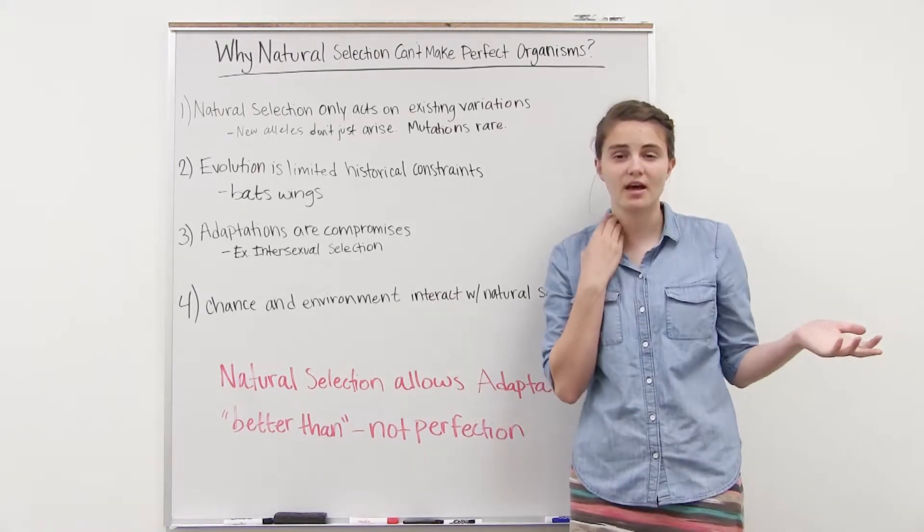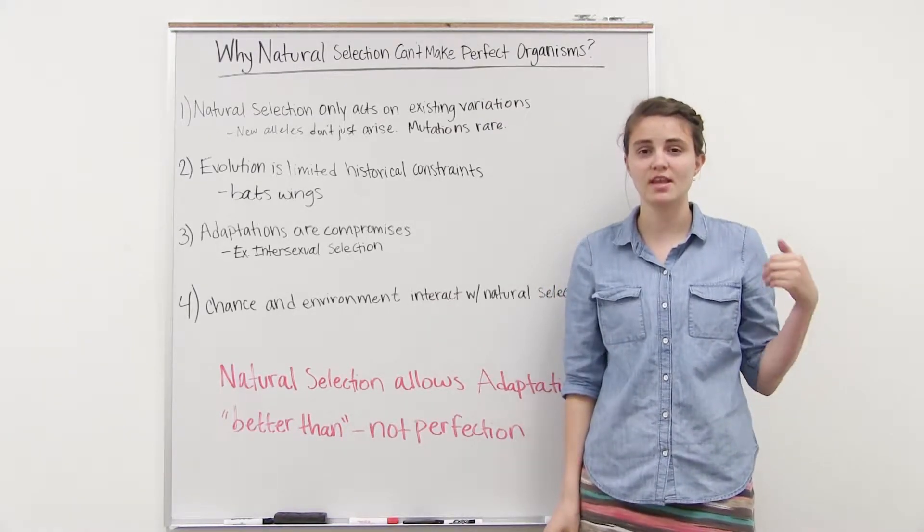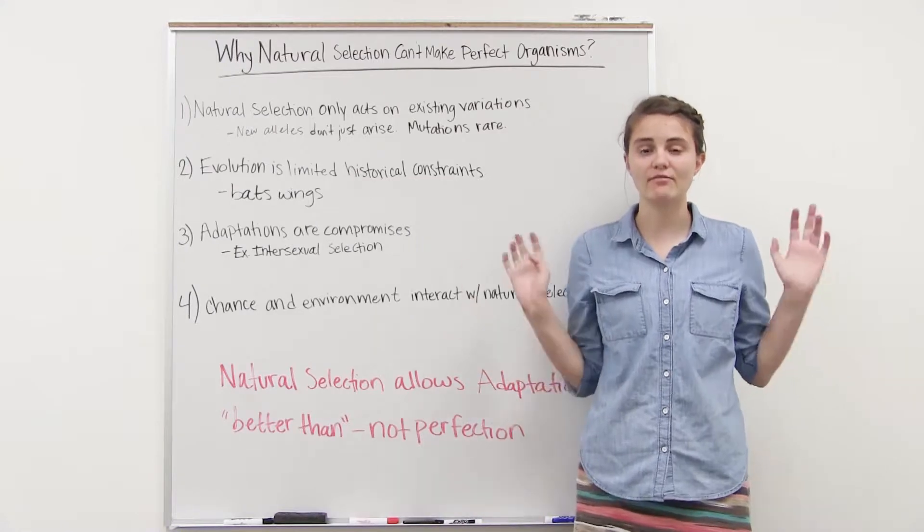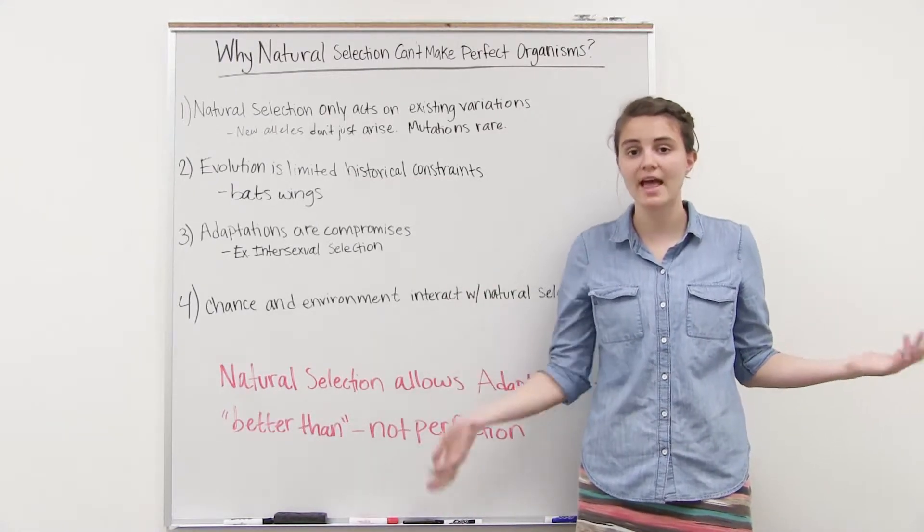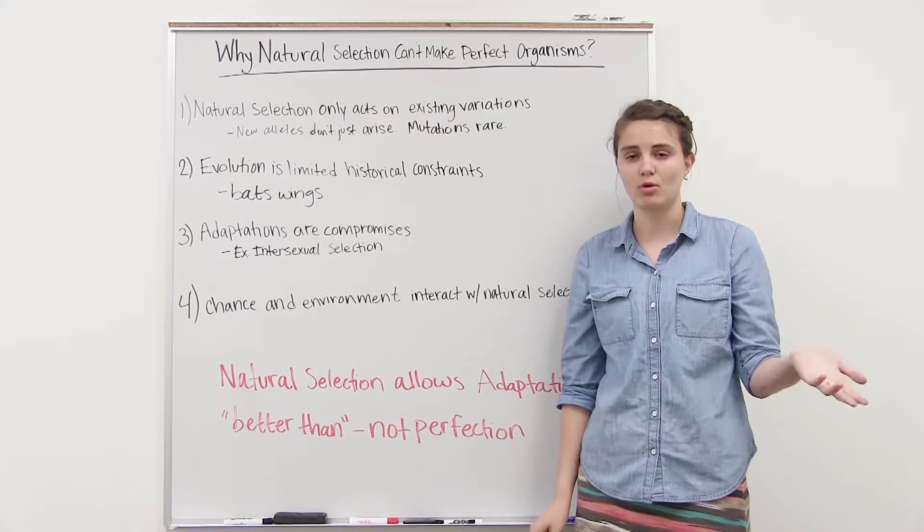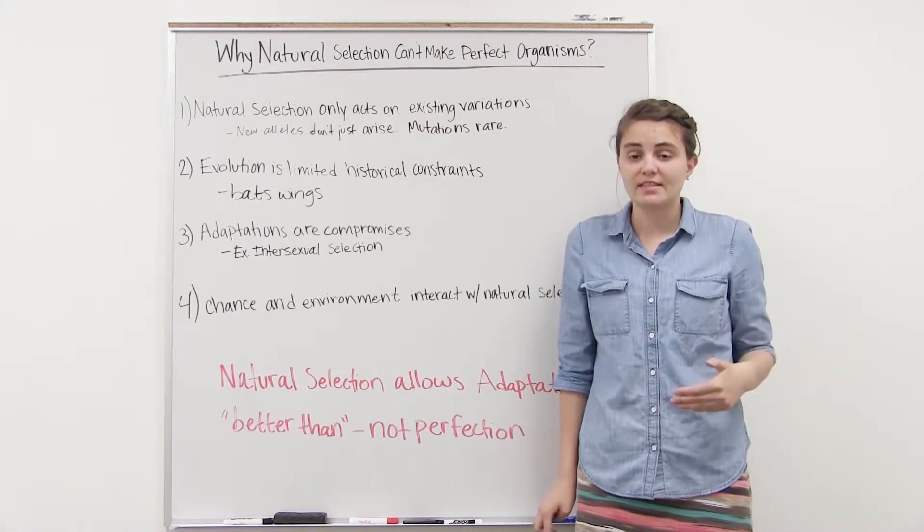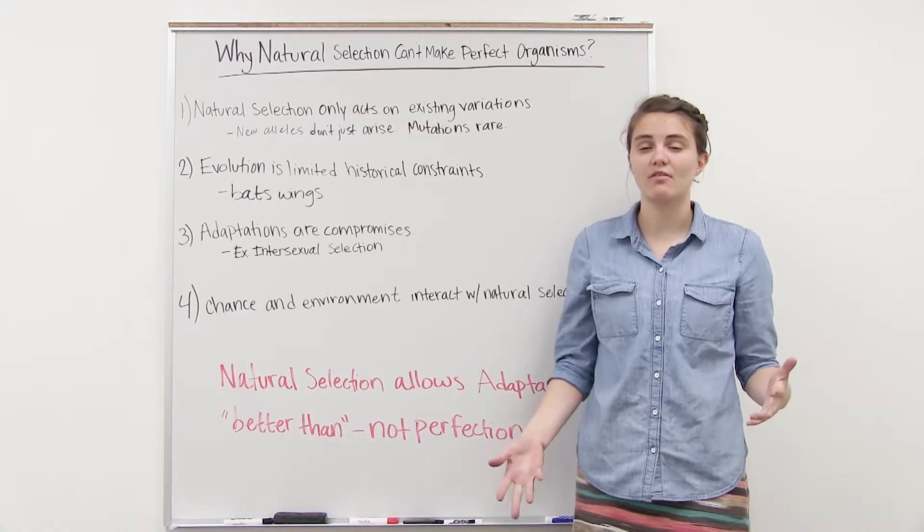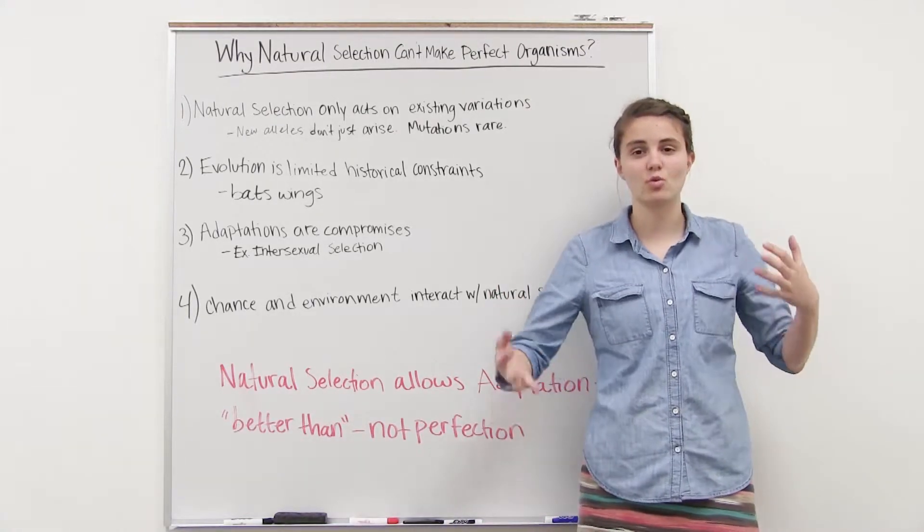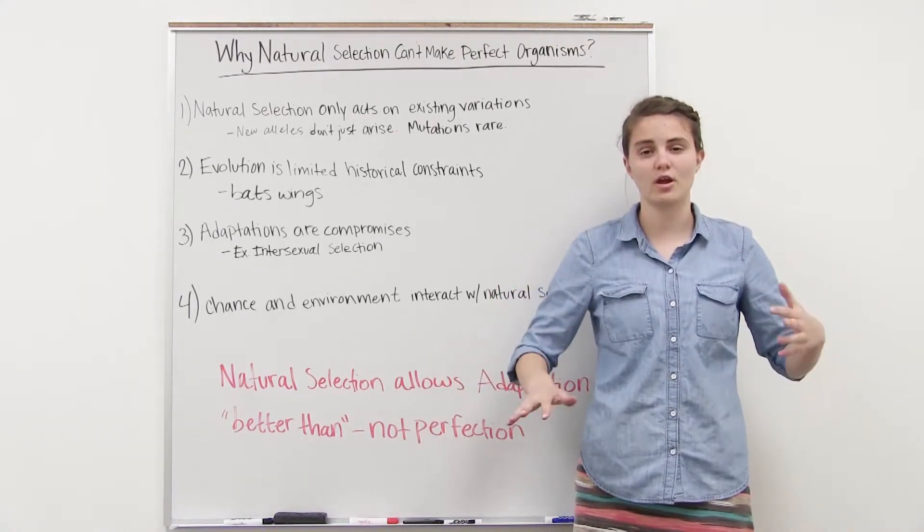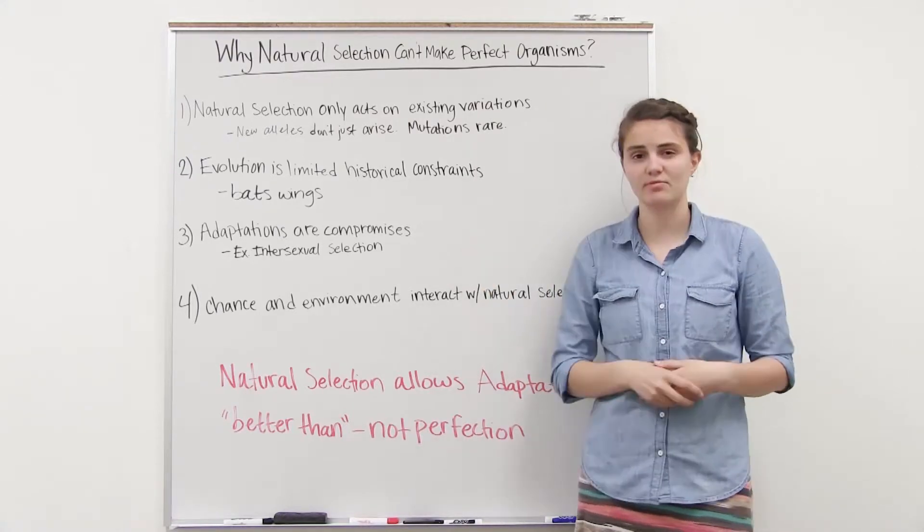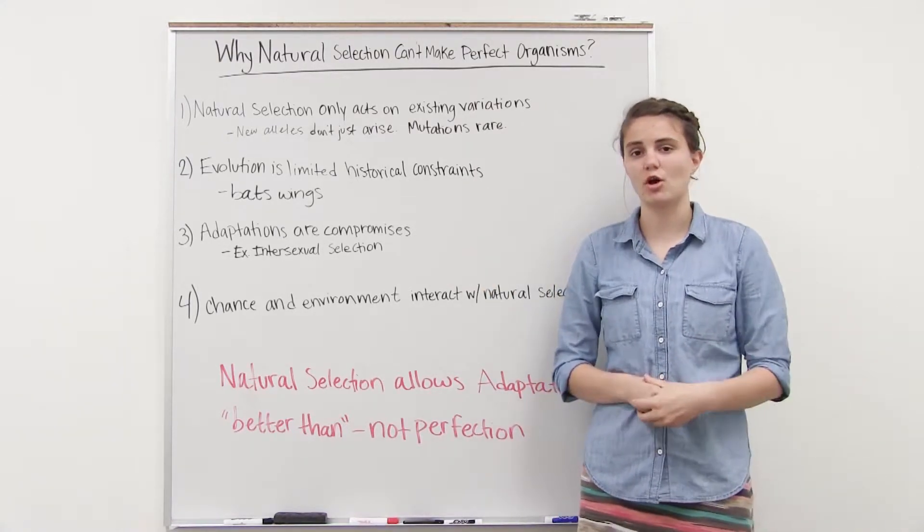In sexual selection, it was advantageous to have these bright colors to attract mates. However, it was also detrimental because they were more prone to being noticed by predators and thus killed. And so it's a balance of which one is more beneficial, which one are we going to choose for. So we have to make these compromises with adaptation all the time.